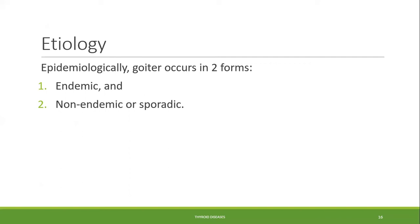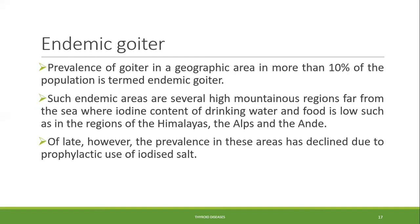Epidemiologically, goiter occurs in two forms: endemic and non-endemic or sporadic. Endemic means many people from a certain region are suffering from the disease. If more than 10 percent of the population in a geographic area is affected with goiter, it is termed endemic goiter.